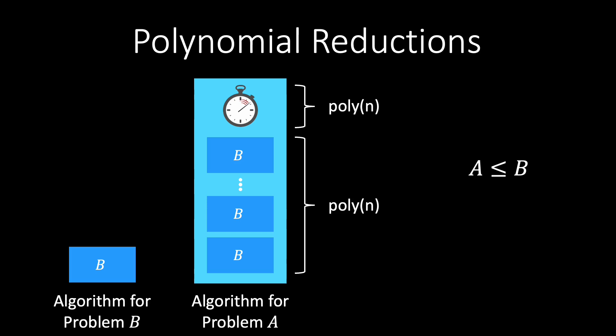If the algorithm that solves problem B runs in polynomial time, and problem A is a decision problem, then the polynomial reduction gives us a polynomial time algorithm that solves problem A. Hence, in this case, the polynomial reduction proves that A is in P.